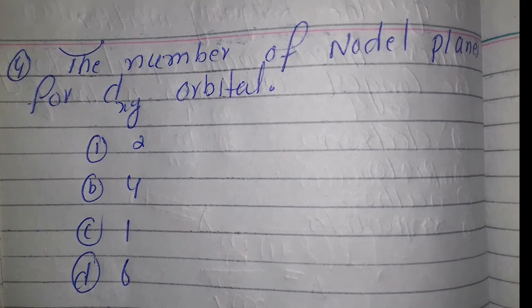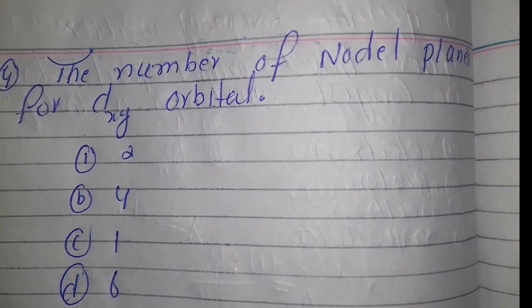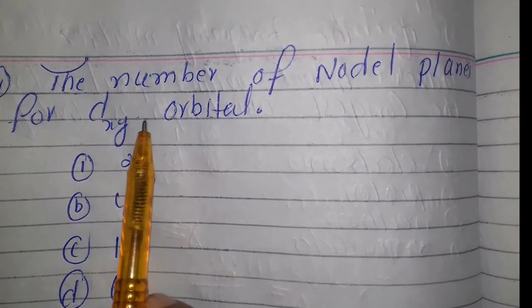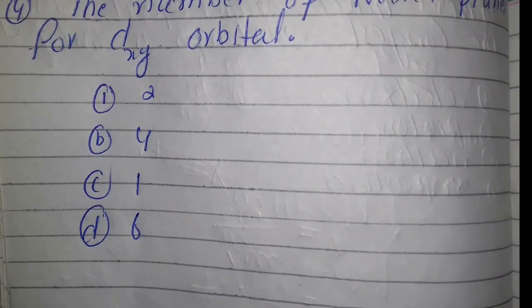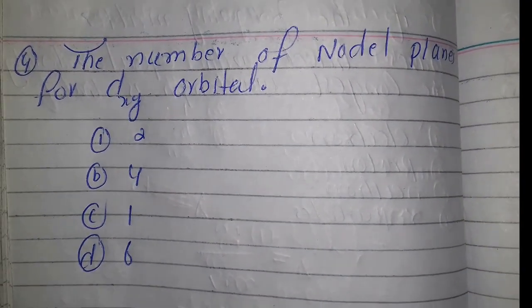Nodal planes are those areas where the electron density is zero. Now we have the orbital d_xy. The angular part of this orbital is proportional to XY.